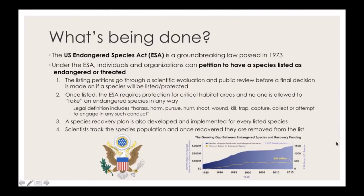The United States Endangered Species Act, or ESA, is a groundbreaking law passed in 1973 and one of the most important laws when it comes to wildlife and endangered species. Under the ESA, individuals or organizations can petition to have a species listed as endangered or threatened. These petitions go through a long process of scientific evaluation, public review, and a final decision is made on whether a species will be listed or protected under the ESA.